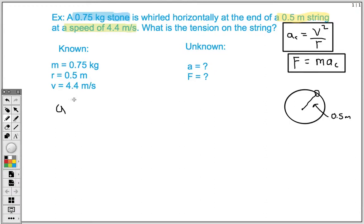So our acceleration equation is going to be our velocity squared. And we know that our velocity here is 4.4 meters per second. And that value is going to be squared. And we're going to divide that by our radius, which is our 0.5 meters. So we're going to plug that in at the bottom of our equation here. And when we go ahead and solve for this,